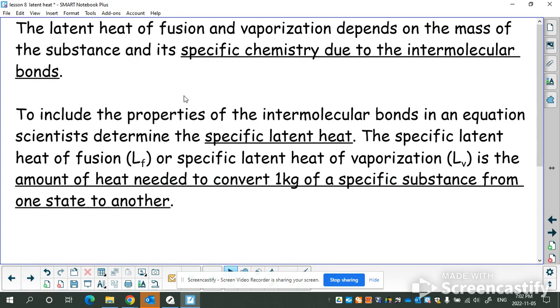The latent heat of fusion and vaporization depends on the mass of the substance as well. Because if I have a giant block of ice, then obviously I need more heat to make that melt than if I just have a tiny little ice cube. Also the specific chemistry. Because melting something like ice, or a frozen alcohol, or a metal like aluminum, that's all going to take a different amount of energy. Luckily, there's a chart for that. Those intermolecular bond things, that chemistry part, we just put that all under specific latent heat. Kind of like we did the specific heat capacity last week. Specific latent heat is just a value, a number.